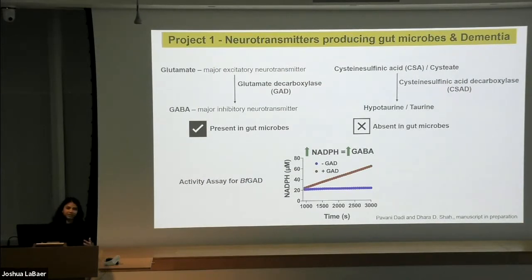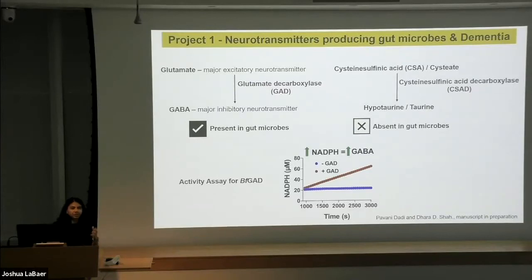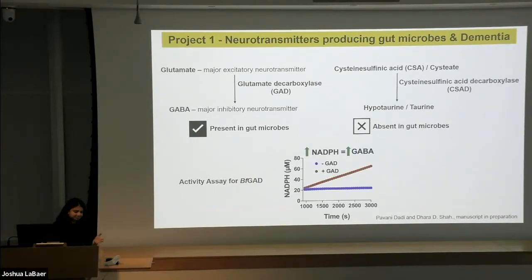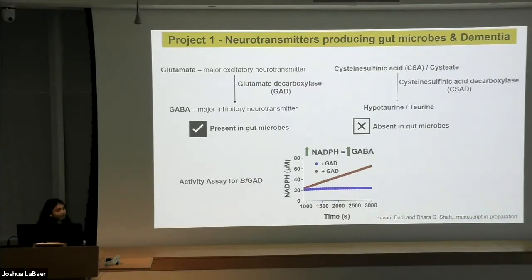The first thing I would like to introduce is microbes that make neurotransmitters and how we can use that to help patients who have dementia. Dementia is a very debilitating disorder. In addition to the loss of normal cognitive functions, there is a huge emotional loss for caregivers as well. Worldwide, there are around 55 million people suffering with dementia, and that number just keeps growing.